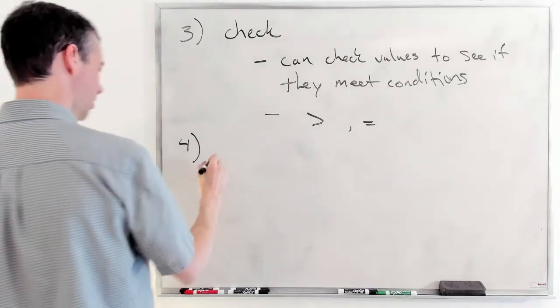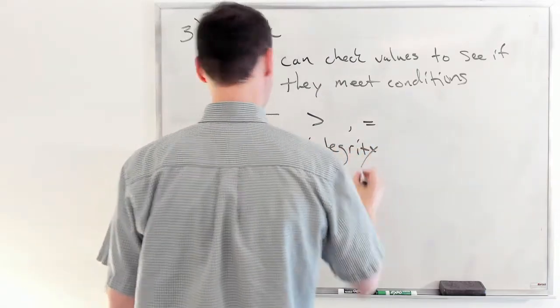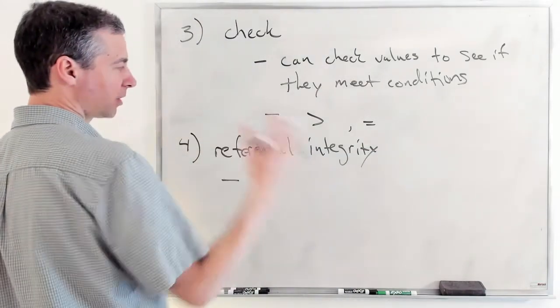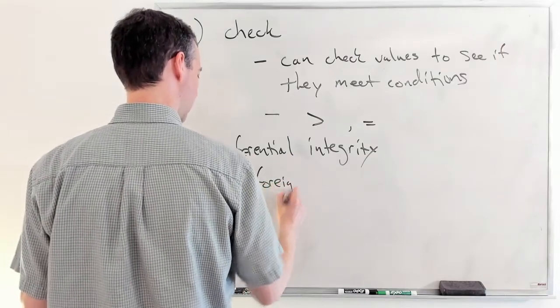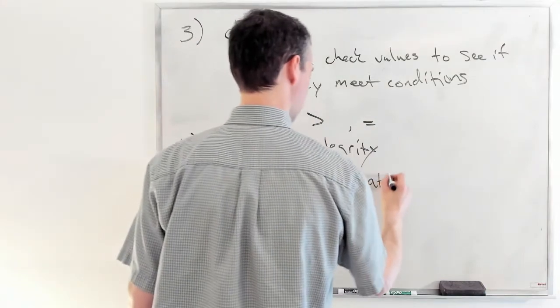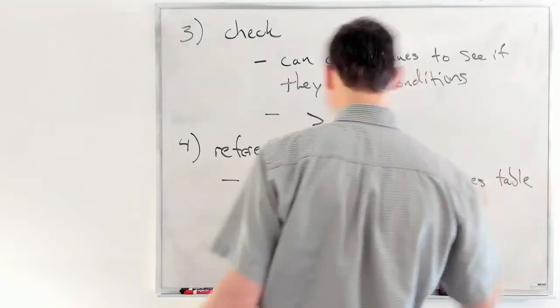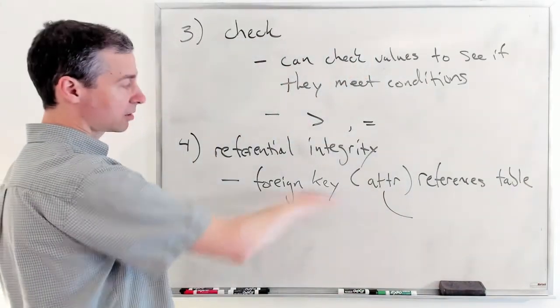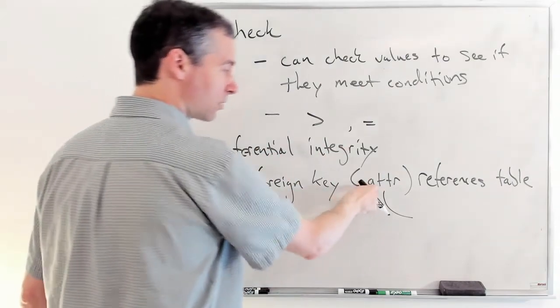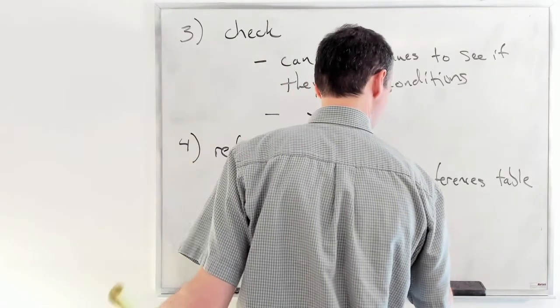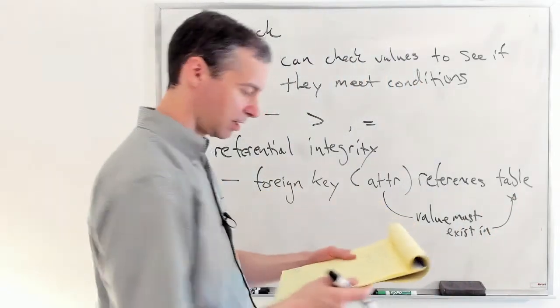All right. The next one is the notion, and we have talked about this one, call it again, referential integrity. This is where we are specifying what the foreign keys are. And so you would have in the create, when you create a table and you would say, oh yeah, this attribute I have here, what you do is you say, yeah, I have a foreign key and then you name what the attribute is and you say it references the other table, the origin table.